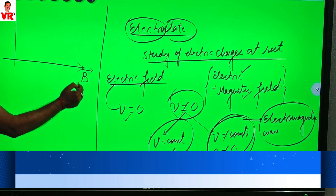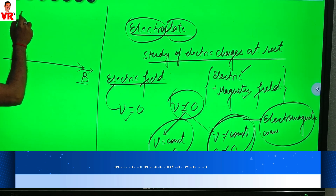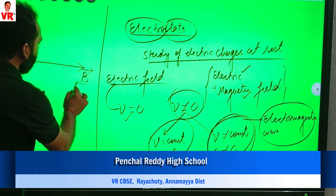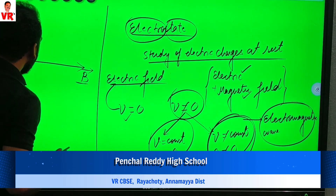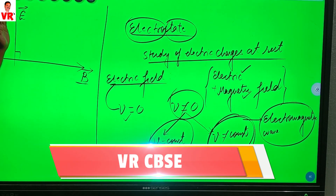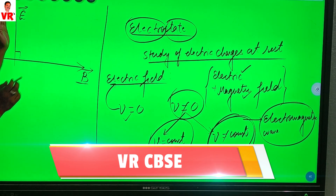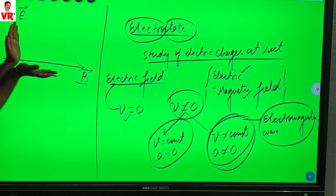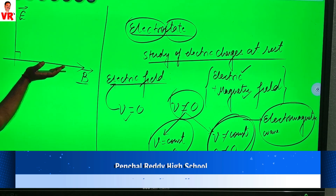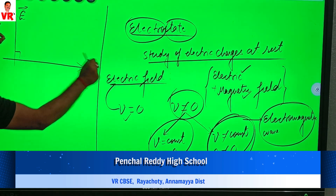The electric field is represented by E, whereas the magnetic field is represented by B. Both are perpendicular to each other. This is the direction of the electric field and this is the direction of the magnetic field. The electric field is varying in the vertical direction and the magnetic field in the horizontal direction.